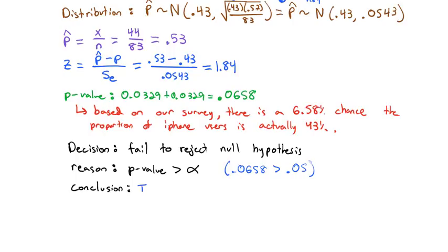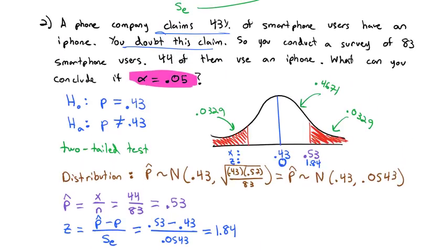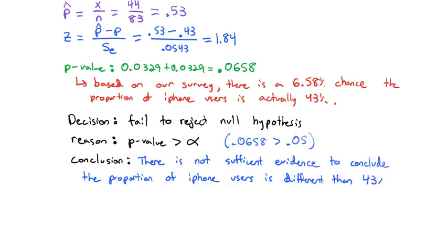So we failed to reject and we're ready to make our conclusion. Following our script: we will say 'there is not sufficient evidence to conclude' — we say 'not' because we failed to reject. The conclusion must be in context of the alternative hypothesis. So we conclude: the proportion of iPhone users is different than 43%.